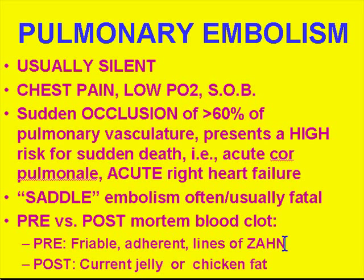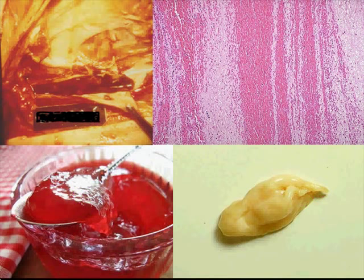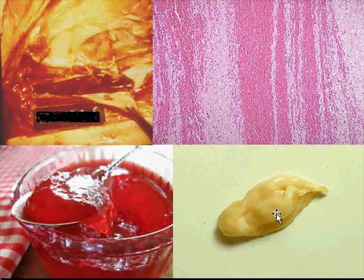If the blood clot has no real texture and maybe layers out into a fatty layer or a jelly-like layer — what they call currant jelly and chicken fat — these are usually post-mortem clots. These lines of Zahn show alternating cells with fibrin. Here is a clot that adheres closely to the wall of a vessel, so you know it could not have formed after the patient died. And by the way, this is real currant jelly and chicken fat — that's exactly what post-mortem blood clots may look like.